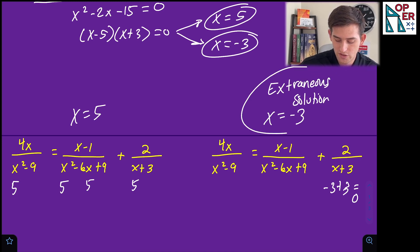Okay, so the extraneous solution is negative three. Our only actual solution to this rational equation would be X is equal to five. So that's how you can identify some extraneous solutions in rational equations.